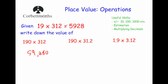Next. This time, interestingly, we've changed the 19 to 190, so we've made that one 10 times bigger. But the 312 has actually become 10 times smaller. Now if you make one number 10 times bigger and the other one 10 times smaller, the answer will actually stay the same. So it's going to be 5,928 for that one.